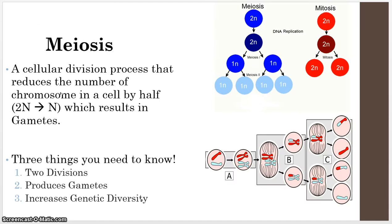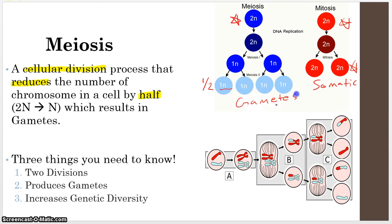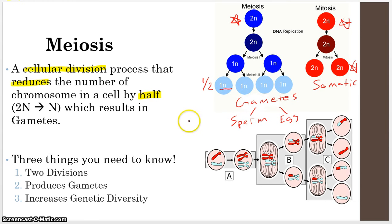That begs the question: where do gametes come from? The answer is meiosis. Meiosis is a cellular division process that reduces the number of chromosomes by half. Whereas in mitosis we start with a 2N cell and end with a 2N cell — recreating somatic cells — in meiosis we start with a 2N cell and end up with N cells, which we call gametes: sperm and eggs. That's really the big idea of meiosis.